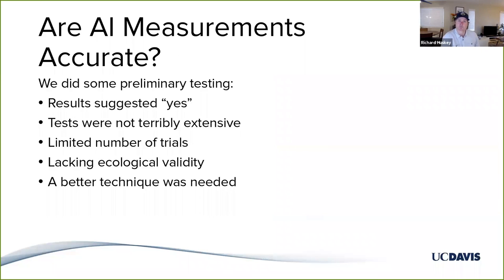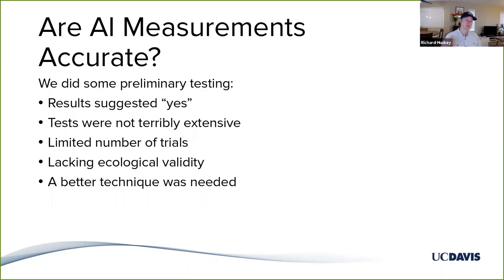Our question was: how accurate is Asteroid Impact in measuring response latencies, or secondary task reaction time measures, to these probes? When we were first developing the game, we did some early tests to find out if Asteroid Impact was accurate, and our answer was yes. But those tests were pretty preliminary — we had a task in mind, we needed Asteroid Impact to measure reaction time latencies, and so we quickly tested to see if it would work for that specific task. But we didn't know a lot about how accurate Asteroid Impact was more broadly, or the extent to which it was a good tool for other types of tasks.